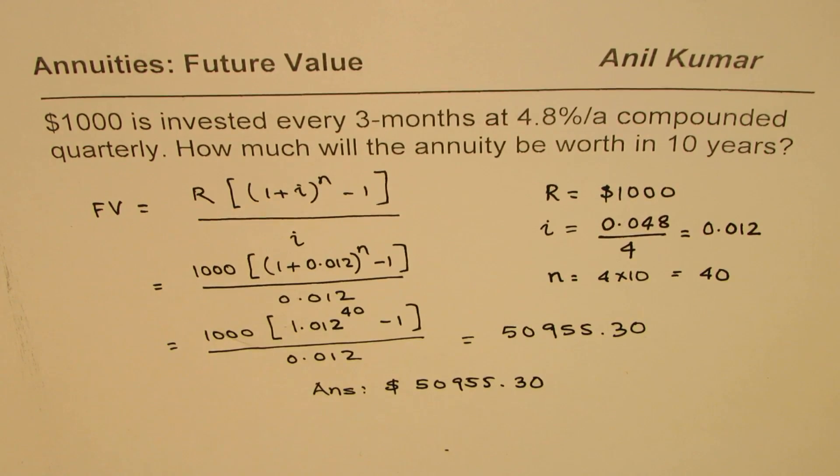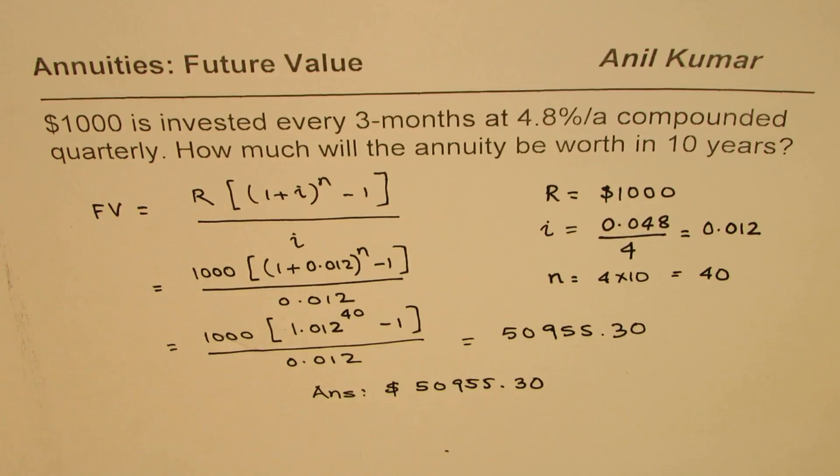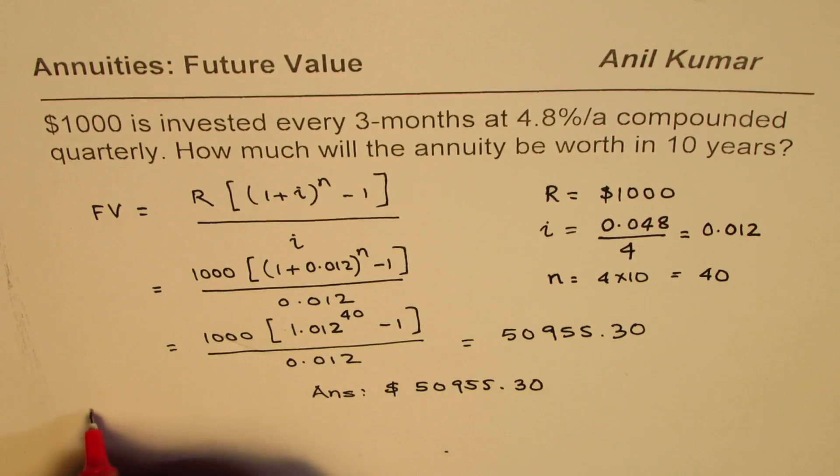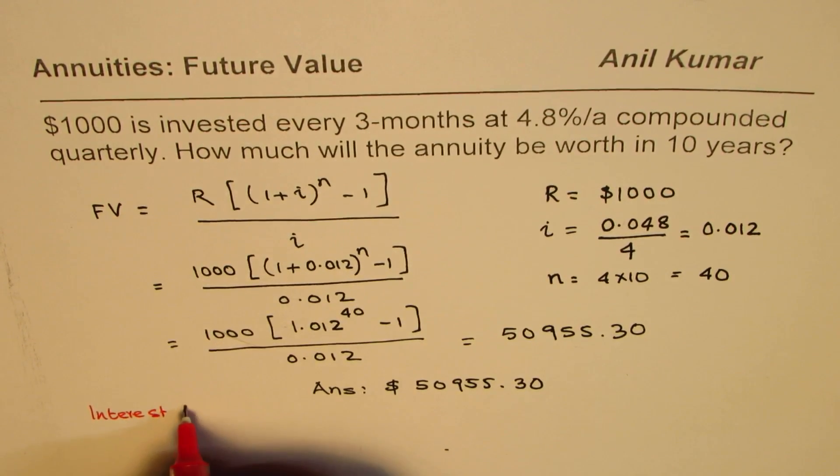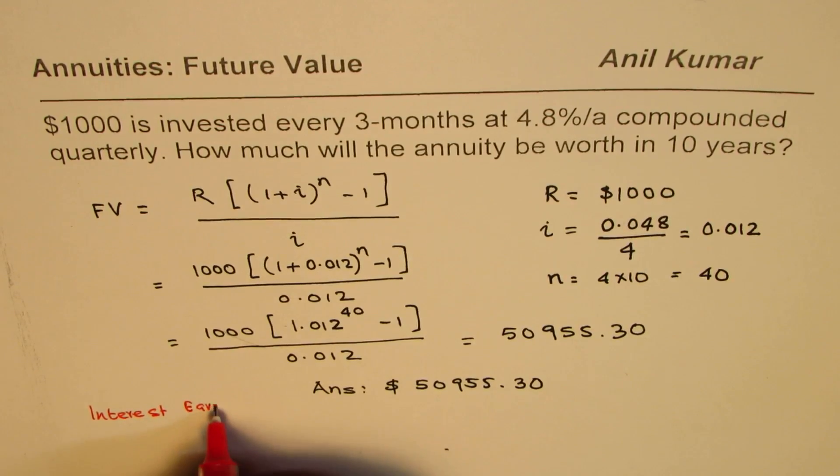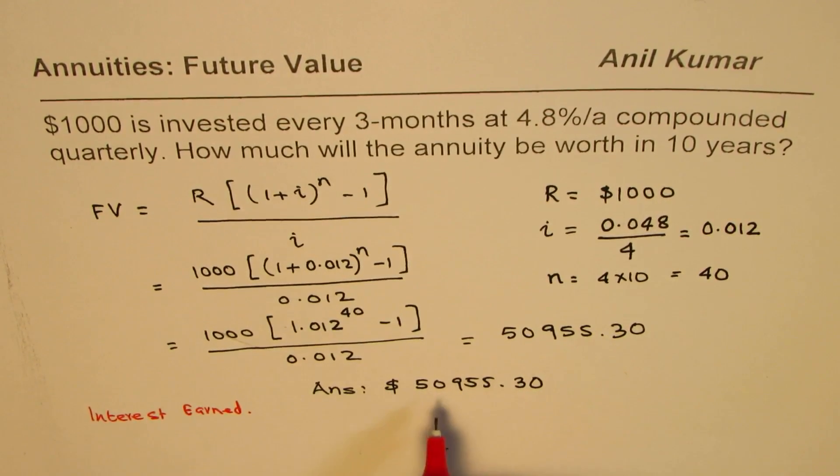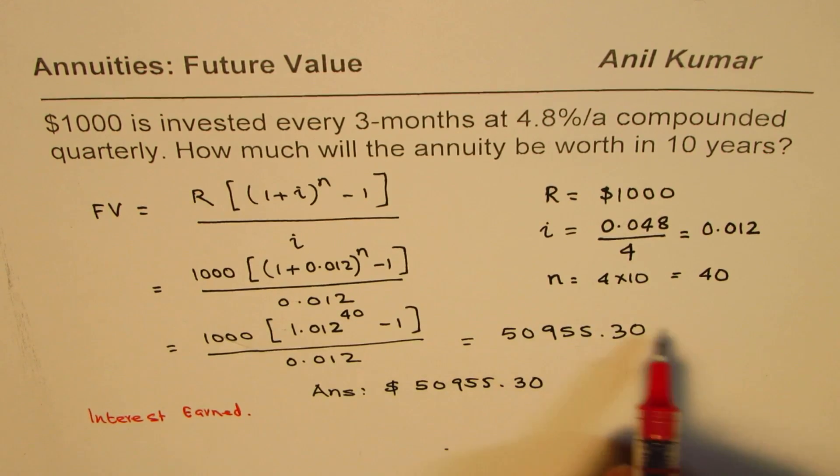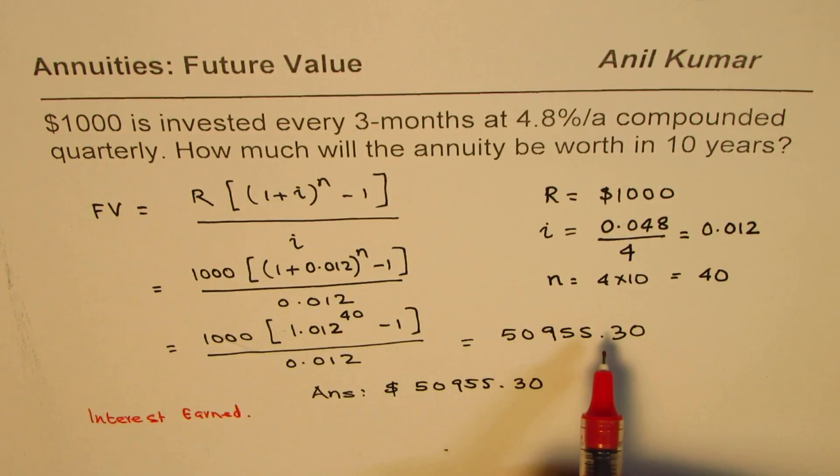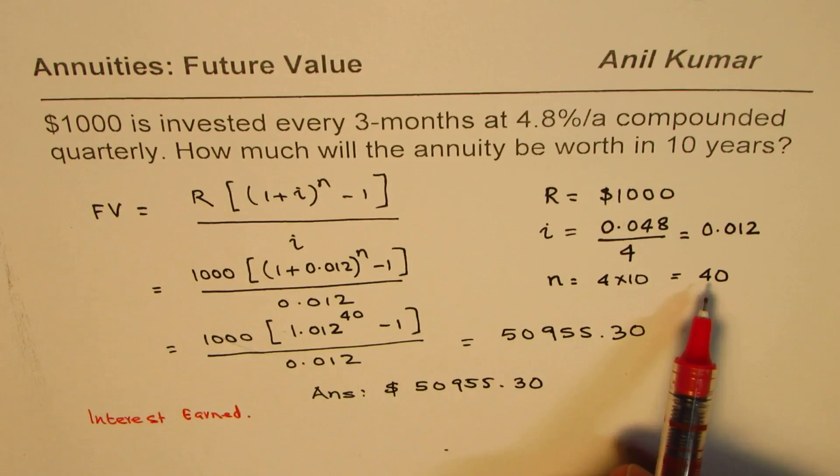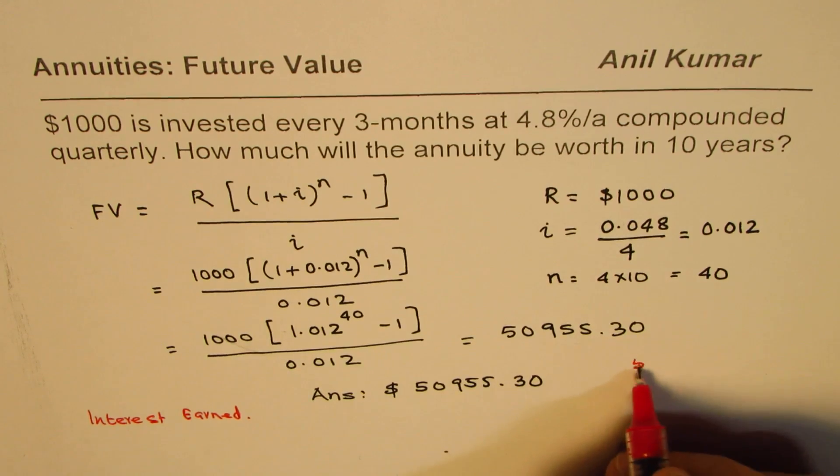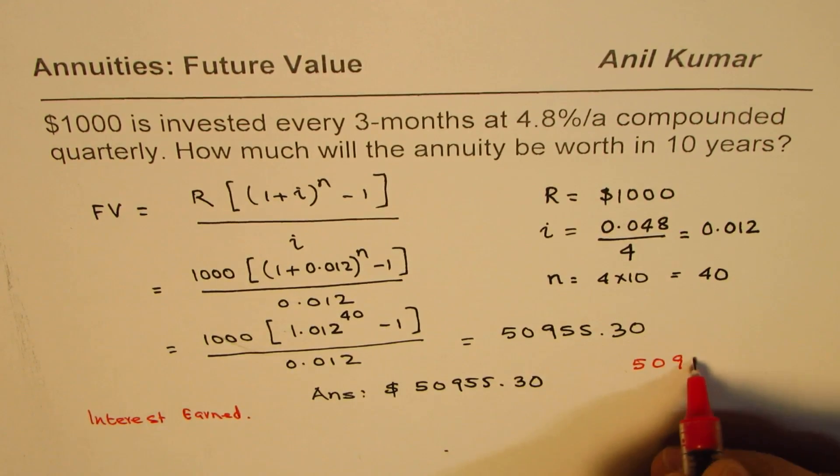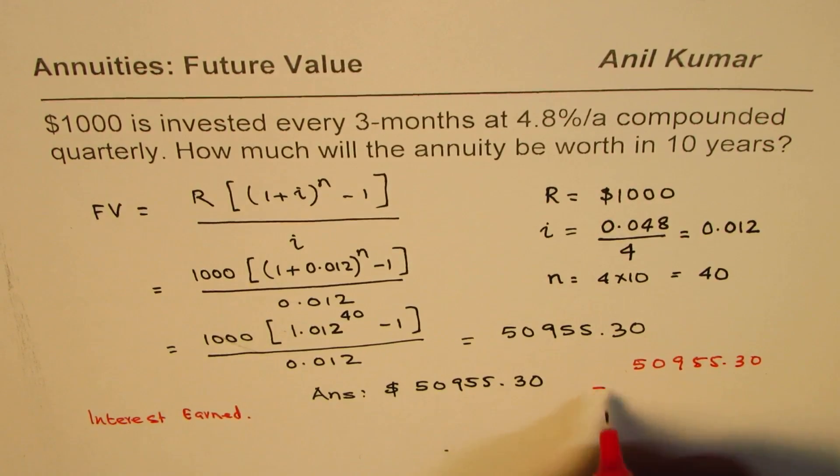I hope that helps. Now as an added exercise, what you can also do is find interest earned. How much will the interest be? This is the future value. How much did you deposit? You deposited 40 times $1000, which is $40,000.